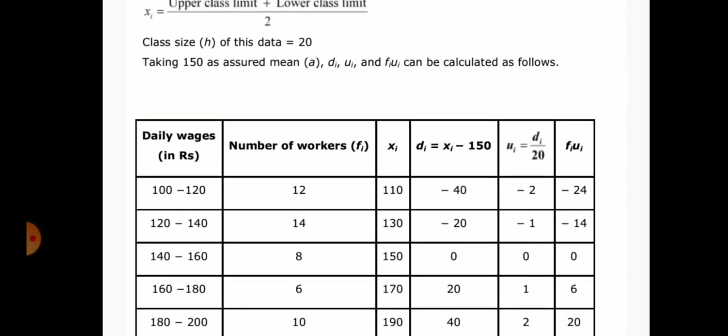The table columns are: daily wages in rupees 100-120, 120-140, 140-160, 160-180, 180-200. Number of workers fi: 12, 14, 8, 6, 10.